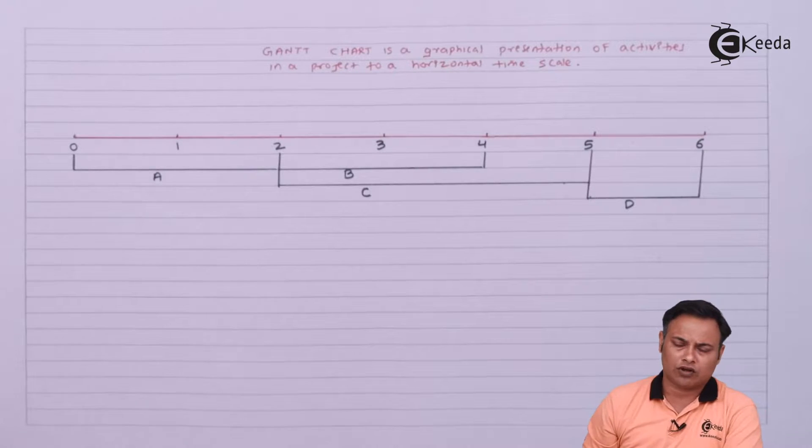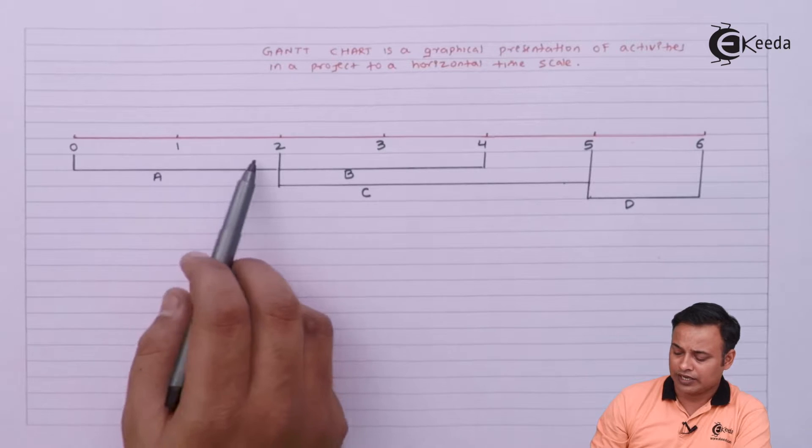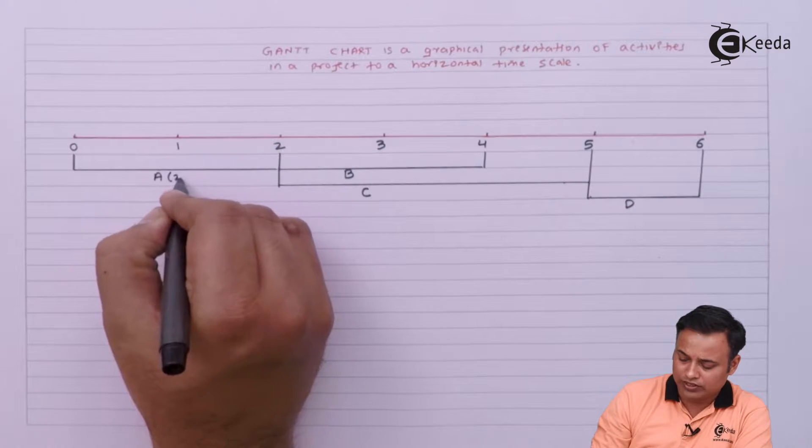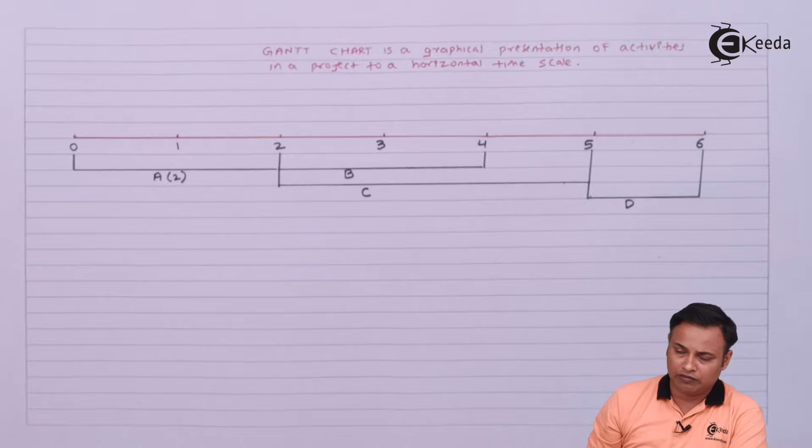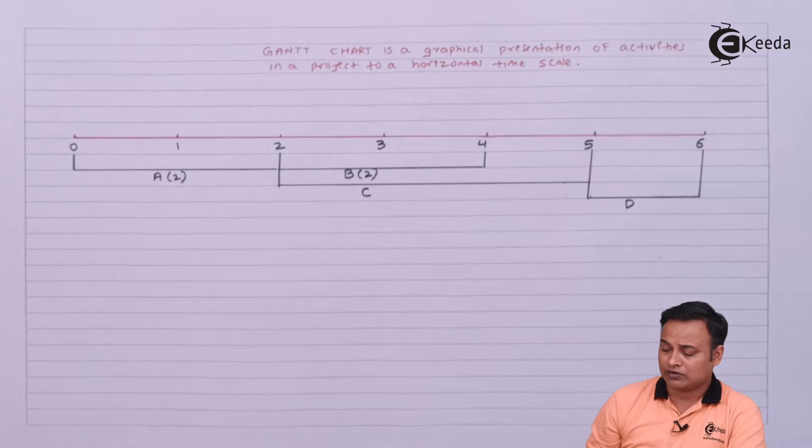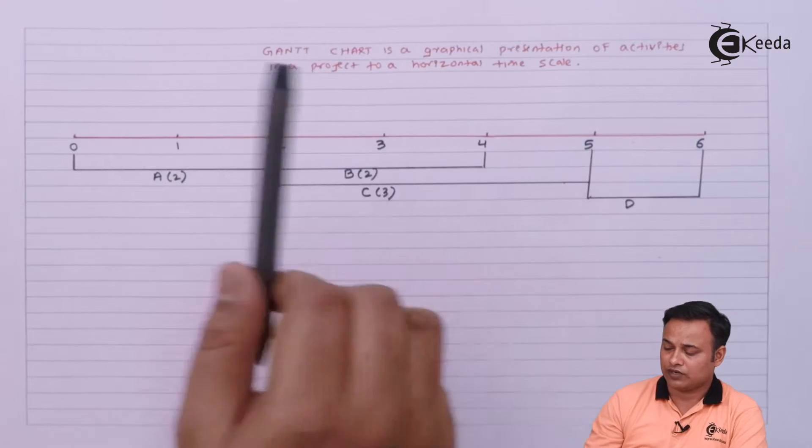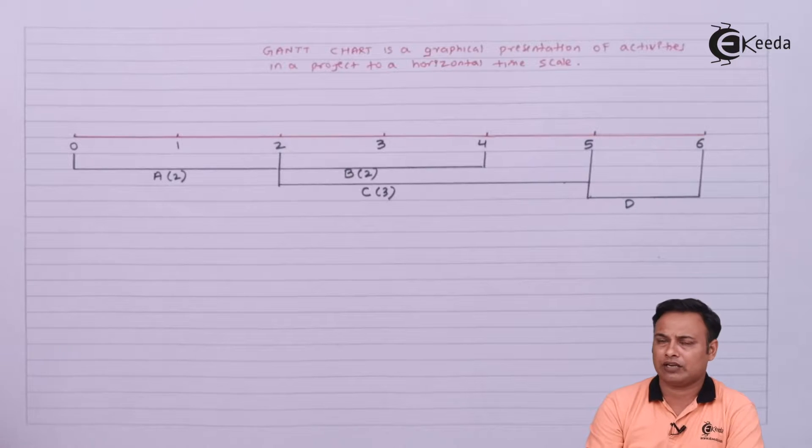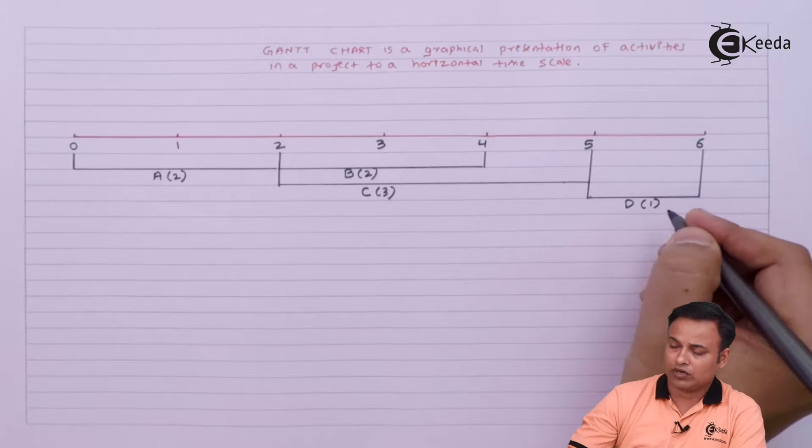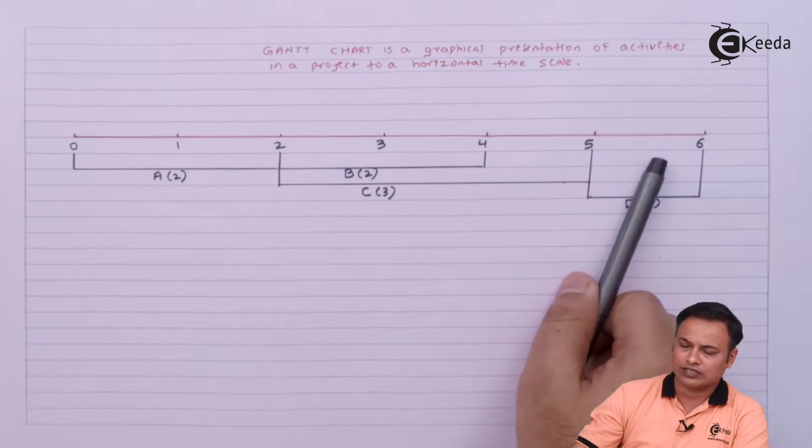My project is for six days. First two days A will take, then after that B will continue for another two days, third and fourth day. At the same time I will have C which will continue for three days - third, fourth, and fifth day. Then we have activity D which will continue for another one day, the last day of the project.